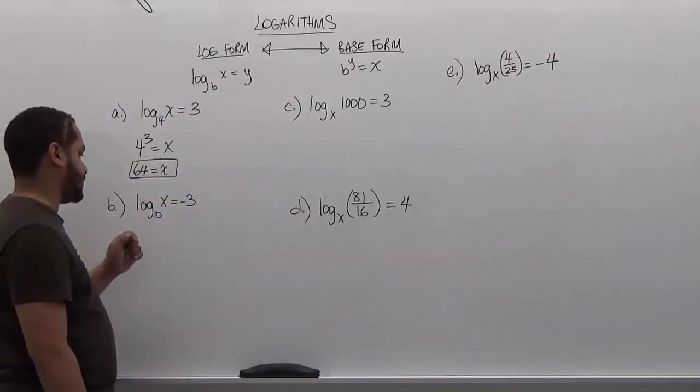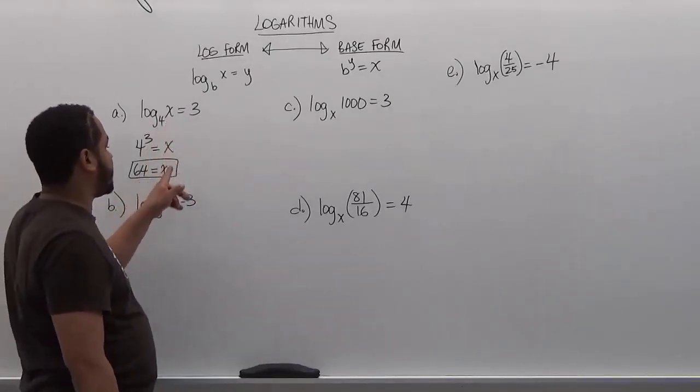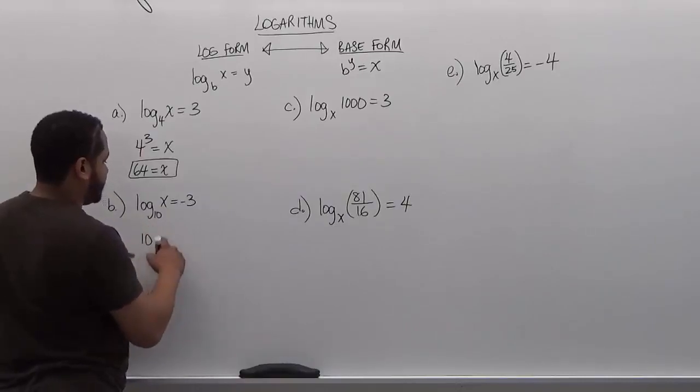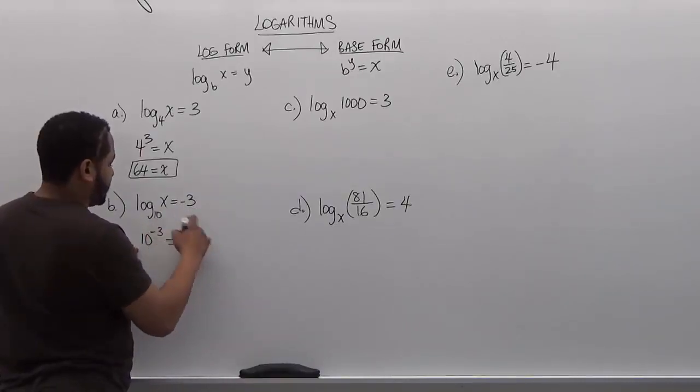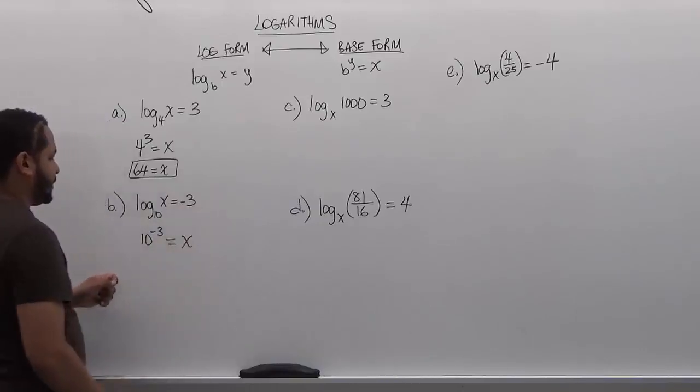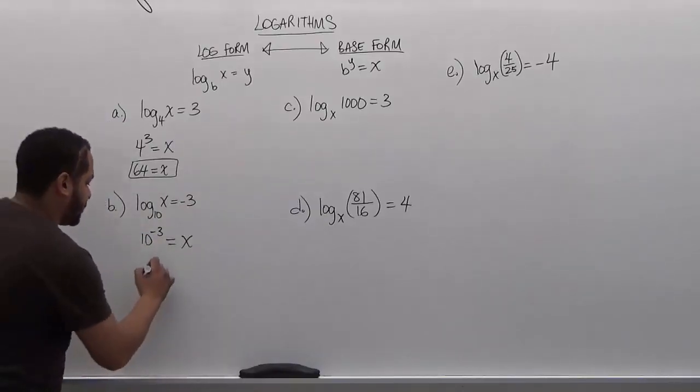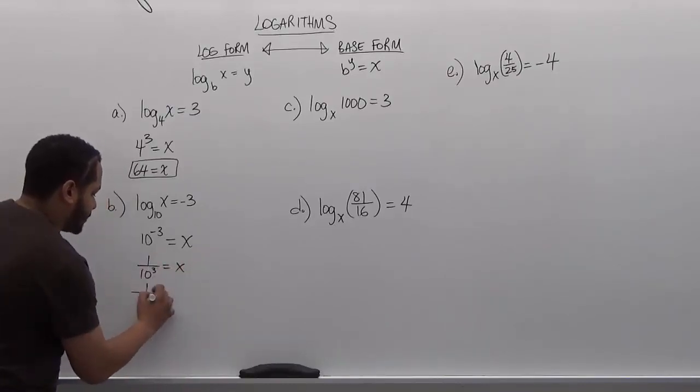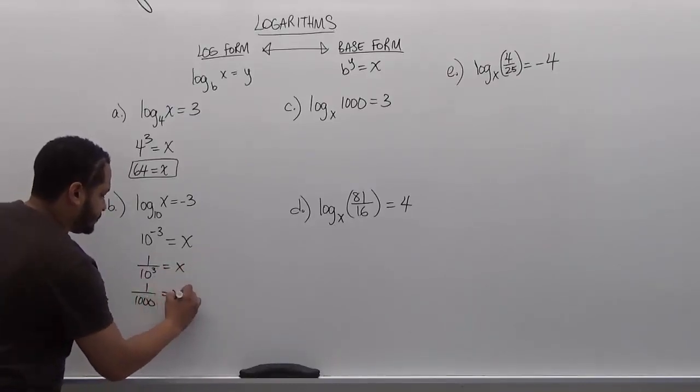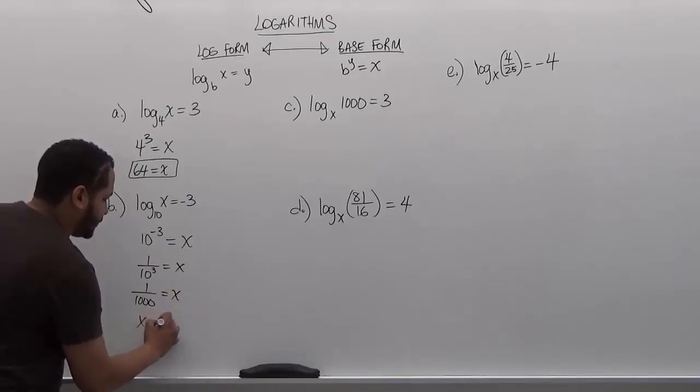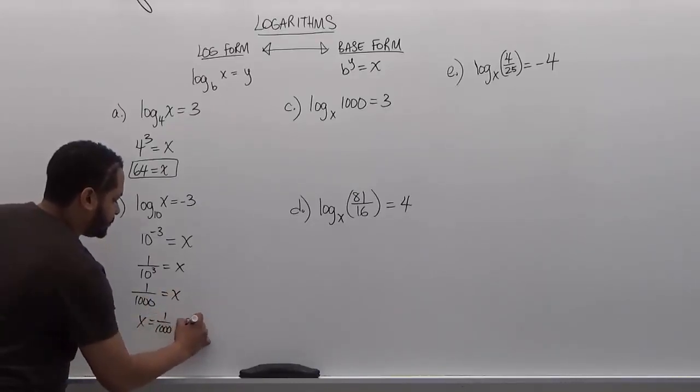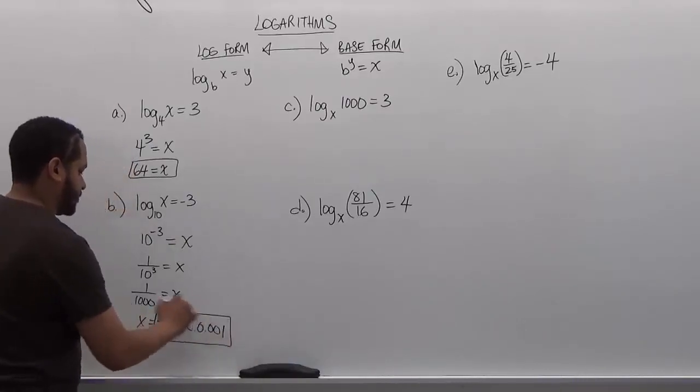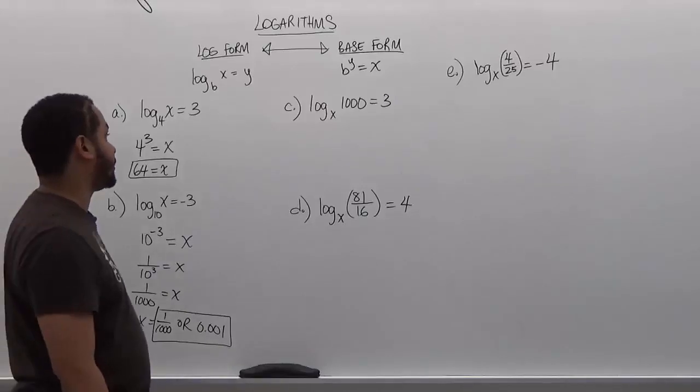Any time you see a logarithm without a base defined, we define the base as 10 because it's in a decimal base of 10. To solve this expression we're going to do the same routine where we take the base and make it 10, the solution is the exponent, and the term is the solution to this base form. Here we have 10 to the negative third power which becomes 1 over 10 to the third, and this then becomes 1 over 1000. That makes x equivalent to 1 over 1000 or it could be 0.001.